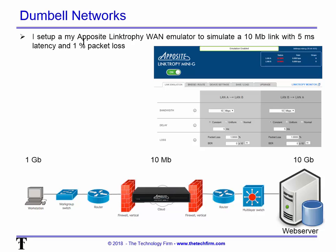What I did was set up my Apposite Link Trophy WAN emulator to simulate a 10 meg link. I set 10 meg, put a little delay in there, and added 1% packet loss just to make it realistic. That's where it sits in our diagram right now.